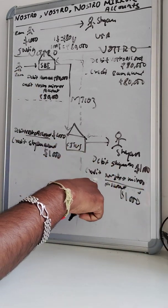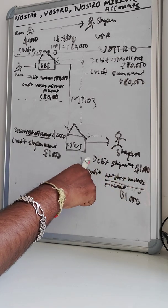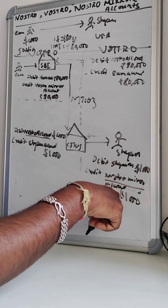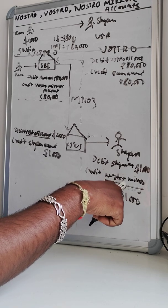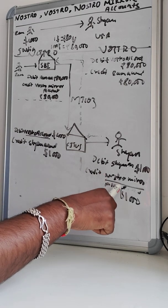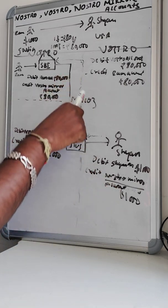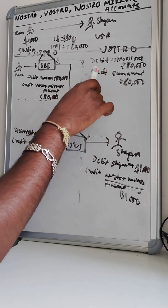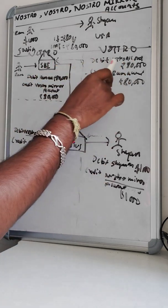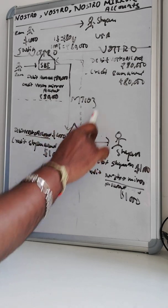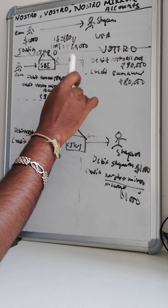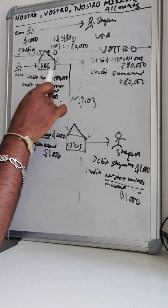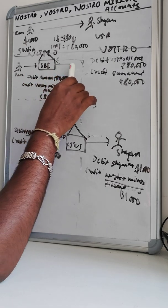For Citibank US it is the Nostro Mirror account, and when seen from Citibank US's side, it will debit Sam's account with one thousand dollars and credit the Nostro Mirror account — this is just for reconciliation and has nothing to do with the account relationship with SBI. Understanding the MT103, SBI gets a message: Citibank US is saying 'SBI, please debit my Vostro account' — for them it is Nostro, but for SBI it is Vostro.